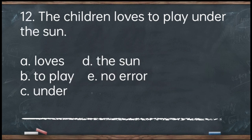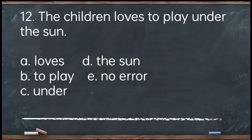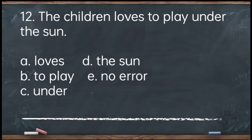Number 12. The children loves to play under the sun. A. Loves. B. To play. C. Under. D. The sun. E. No error. The answer is letter A — 'loves.' Basic rule: if you use I, you, we, they, or a plural subject, the verb should be in the base form — simple present tense without an added S or D. Corrected: The children love to play under the sun.